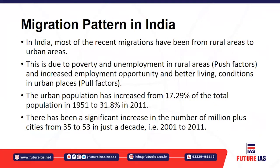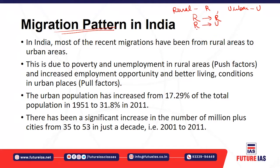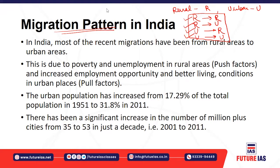Next are migration patterns in India. Denoting rural as R and urban as U, migration can happen from rural to rural, rural to urban, urban to rural, and urban to urban. These are the four possibilities in any country, and different conditions determine which type of migration takes place.